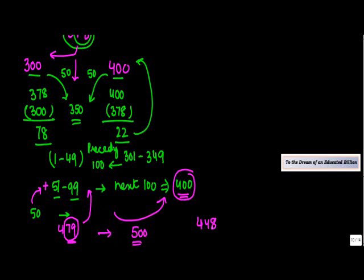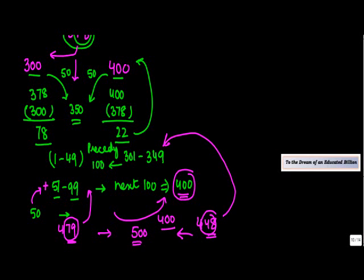But if I talk about 448, 48 is what? It is lying between 1 to 49, right? Therefore, it has to be rounded off to the preceding one, which is 400. And that's the way the rounding off works for 100.